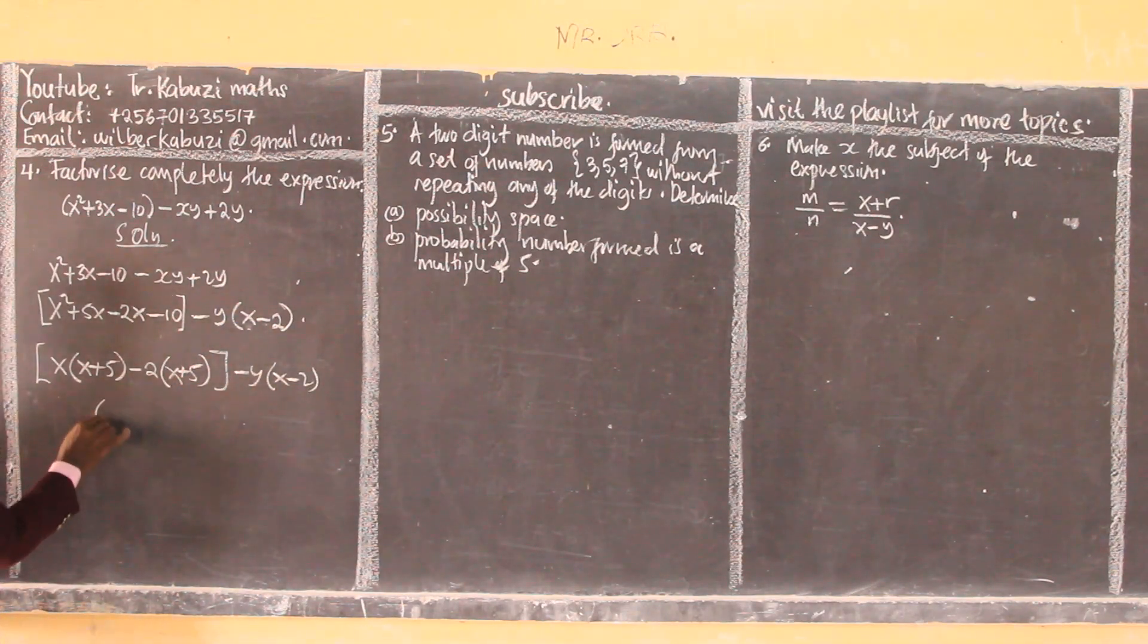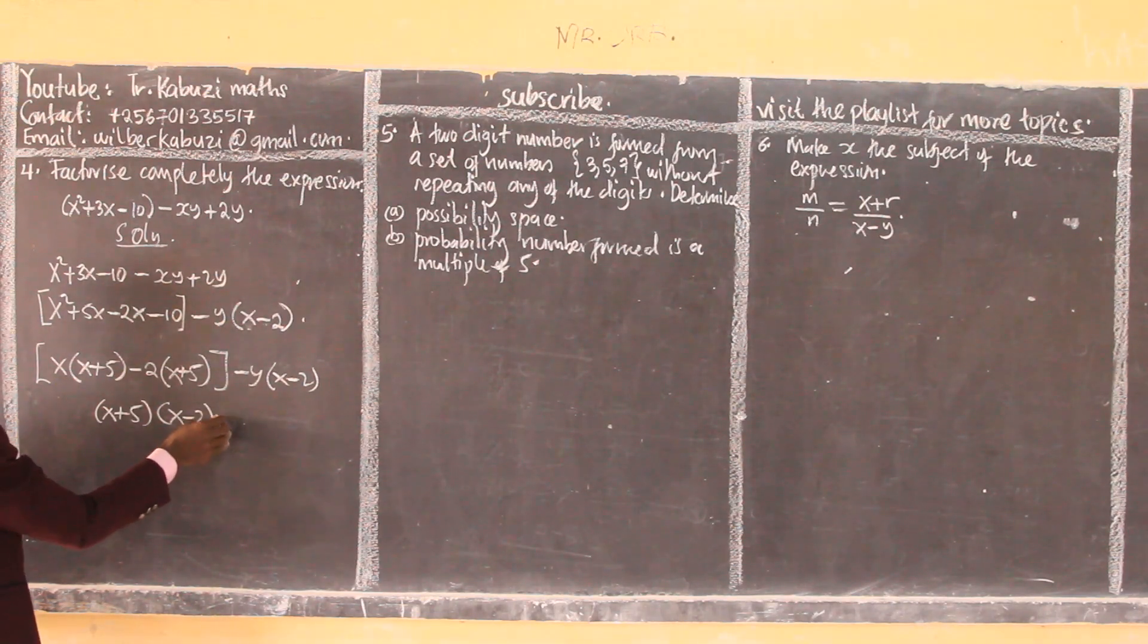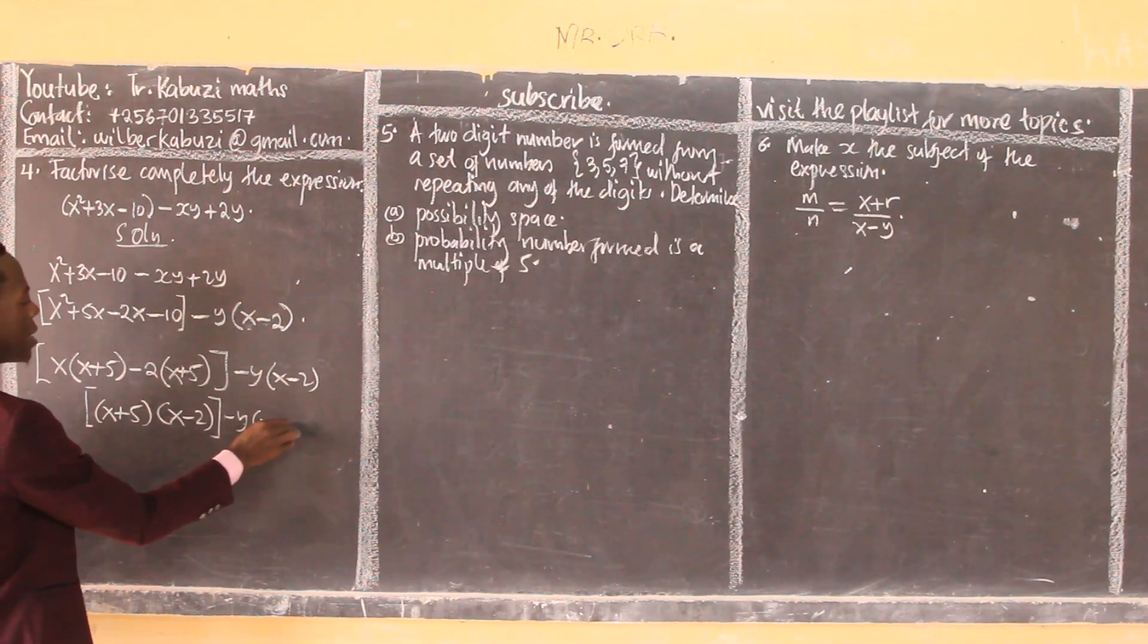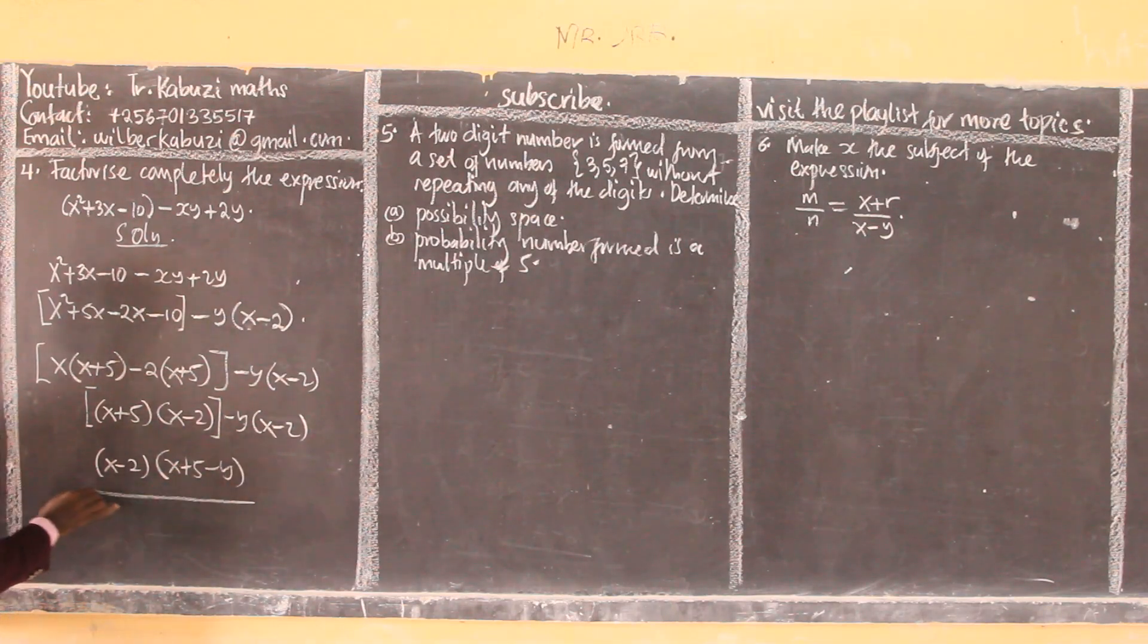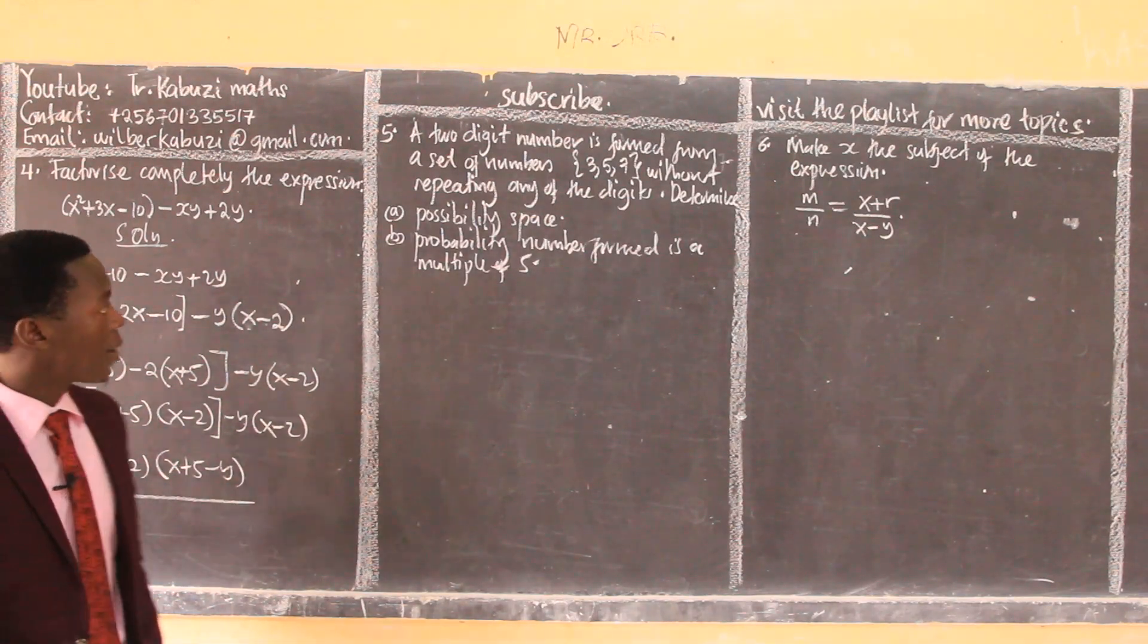Factorize out this, I have now x plus 5 because this is common here and here, so I factorize it out to remain with x minus 2. Now this whole thing minus y into x minus 2. But I'm seeing this bracket is common here and there, so I also factorize it out. So x minus 2, I'll be remaining with x plus 5 minus y. And that's how we factorize that completely.